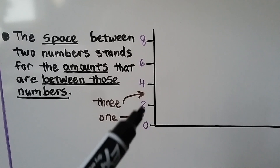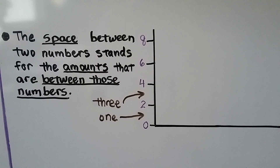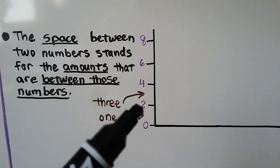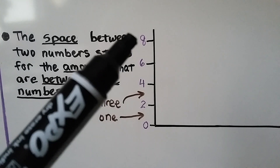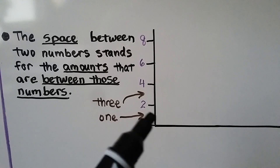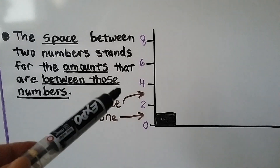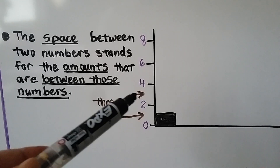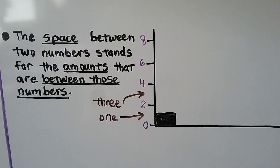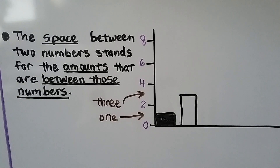Bird is in between four and eight, so it must be six, and reptile is also six. Sometimes there won't be little lines between the scale numbers — just an open space — and the space between two numbers stands for the amounts in between. If a bar is right in the middle of a scale that counts by twos, the answer would be one. If it's in the middle between two and four, the answer is three.